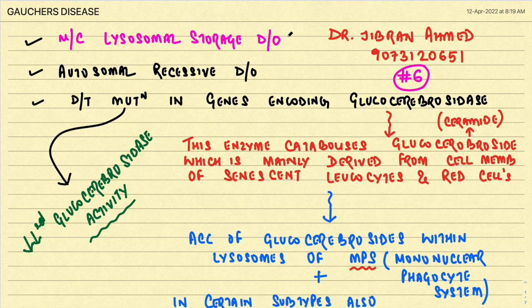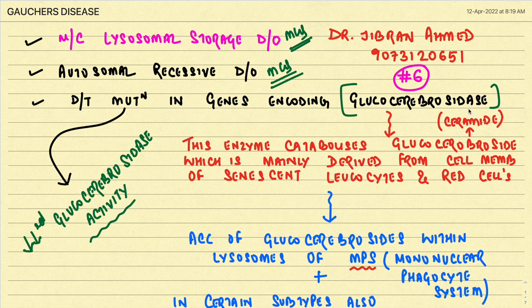Gaucher's disease is the most common lysosomal storage disorder. It is an autosomal recessive disorder occurring because of a mutation in the gene encoding an enzyme called glucocerebrosidase. The normal function of glucocerebrosidase is to catabolize glucocerebroside, which is a ceramide mainly derived from the cell membranes of senescent leukocytes and RBCs.